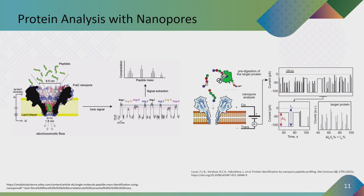Recently, most researchers are more interested in working with nanopore technology for protein analysis. Proteins are challenging because at the same pH, some amino acids can have a positive charge while others have a negative charge. Different strategies are being adopted — for example, using protease enzymes to linearize the protein structure and then cutting it into small peptides so they can be easily translocated through the nanopore.